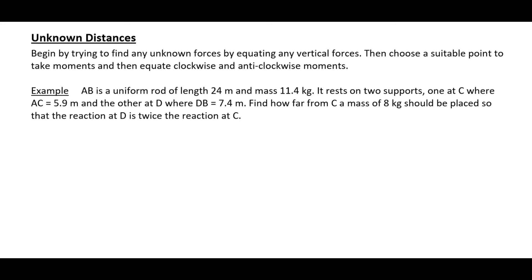In this question we're going to have to draw a diagram. I haven't drawn this for you yet, so I will be drawing this for you now. AB is a uniform rod of length 24 meters and mass 11.4 kg. It rests on two supports, one at C where AC is 5.9 meters and another at D where DB is 7.4 meters. Find how far from C a mass of 8 kg should be placed so that the reaction at D is twice the reaction at C.